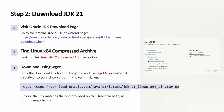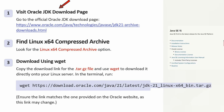Step 2 is to download JDK 21. For that, visit the Oracle JDK download page using this particular link. Then find the Linux 64 compressed archive. Then, using the wget command, you can download the archive.